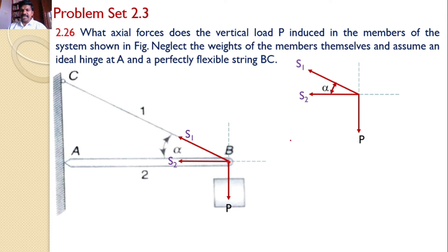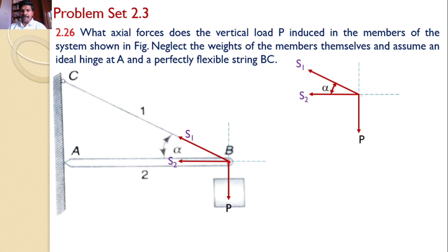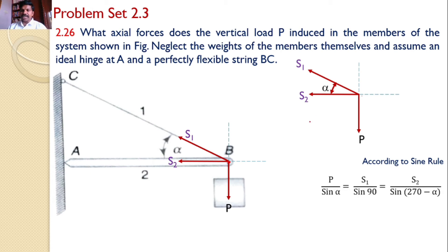This system consists of three forces, all meeting at a single point and all divergent. Hence, we can apply the concept of the sine rule. I have prepared a separate video on the sine rule — please watch it from RK Tutorials. Applying the sine rule: P divided by the sine of the angle between the other two forces S1 and S2, which is alpha, equals S1 divided by the sine of the angle between S2 and P, which is 90 degrees. So P divided by sine alpha equals S1 divided by sine 90.